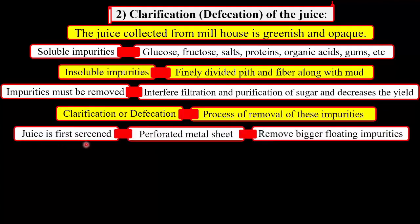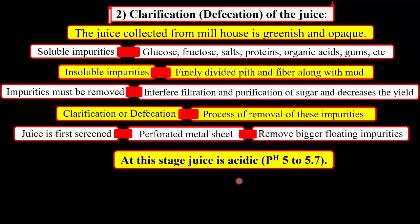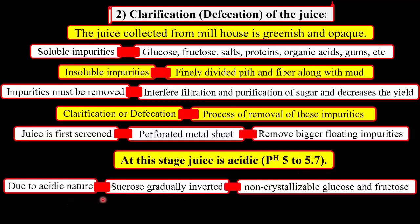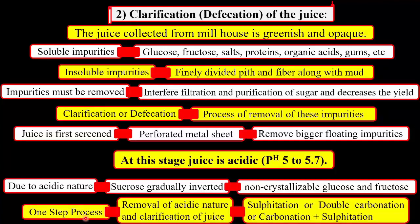In clarification, juice is first screened through a perforated metal sheet to remove the bigger floating impurities present on the surface of the juice. At this stage, the juice is acidic in nature — its pH is 5 to 5.7. Due to this acidic nature, sucrose undergoes hydrolysis and gives inverted non-crystallizable sugars like glucose and fructose. In the one-step process, removal of this acidic nature and clarification of the juice is carried out by using the sulphitation process, double carbonation, or a combination of carbonation and sulphitation. The most commonly used clarification process in the worsted-day process is the sulphitation process.